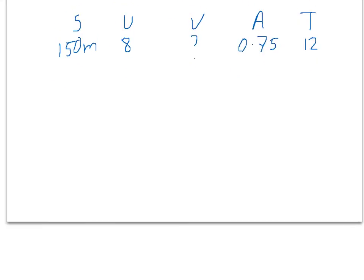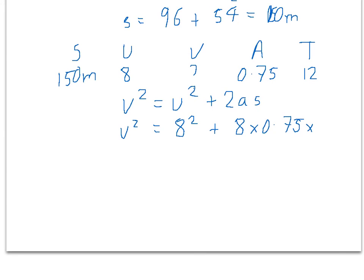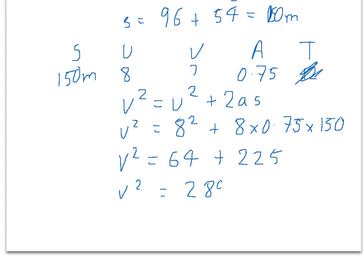Using V squared equals U squared plus 2AS with our known values: V squared equals 8 squared plus 2 times 0.75 times 150. That's 64 plus 225, which equals 289. That isn't the final answer because that's V squared, so we need to square root our answer. The square root of 289 is 17, so the final velocity is 17 metres per second.